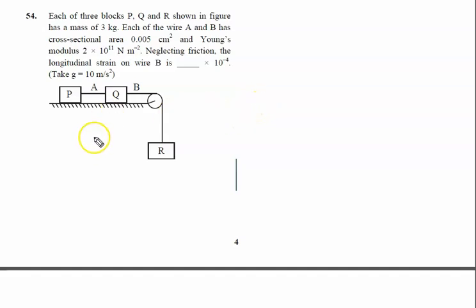Each of the three blocks P, E, Q shown in the figure has a mass of 3 kg. Each of the wires A and B has a cross-sectional area of 0.005 cm², which converts to 10^-4 m².